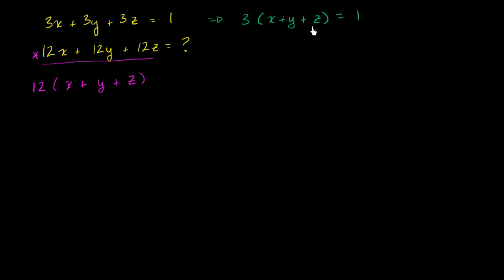If I want to solve for x + y + z, I just divide both sides of this equation by 3, and I'm left with x + y + z = 1/3. So here, instead of x + y + z, I can write 1/3.